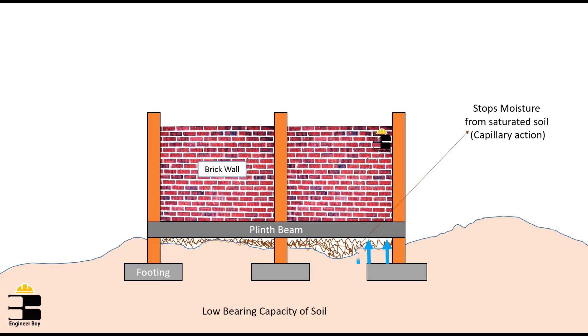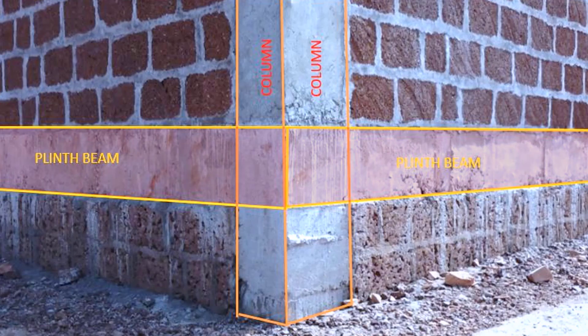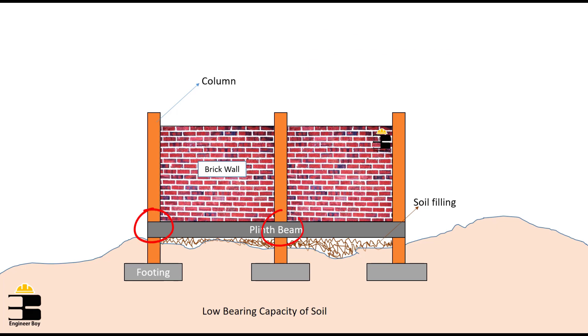Such beam prevents moisture from entering the building from the foundation site, and these types of beams bind all the columns at the plinth level.